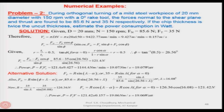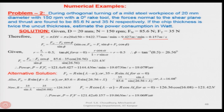Next example, Problem 2: during orthogonal turning of a mild steel workpiece of 20 mm diameter at 150 rpm with a 0-degree rake angle, the forces normal to the shear plane and thrust are found to be 85.6 N and 35 N respectively. If the chip thickness is twice the uncut thickness, estimate the power consumption in watts. First, find the cutting velocity: v = pi × d × n, which gives the value in meters per minute. The chip thickness ratio r = 0.5 since chip thickness is twice the uncut thickness.